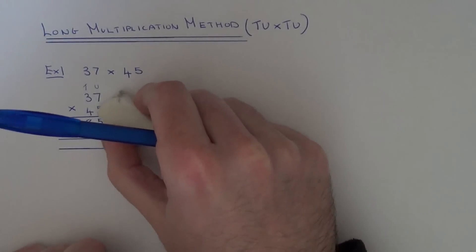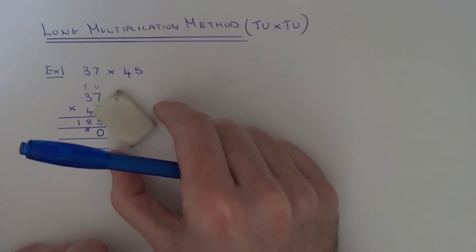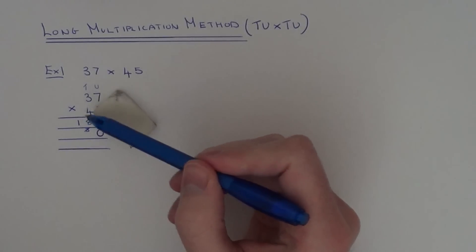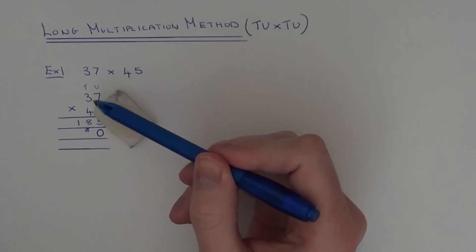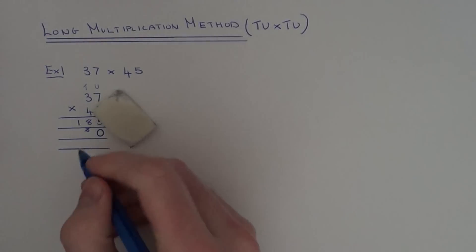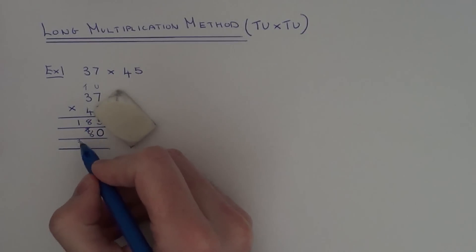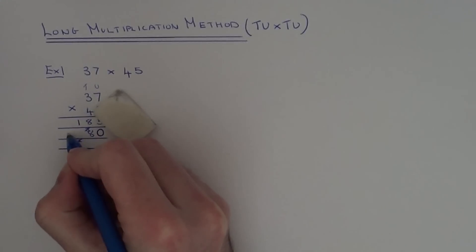So if we cover up that 5, it makes things a little bit easier to see. So now we've got to do 37 times 4. So we do 7 times 4, which is 28. So put the 8 there and the 2 underneath. 3 times 4 is 12, plus the 2 is 14.